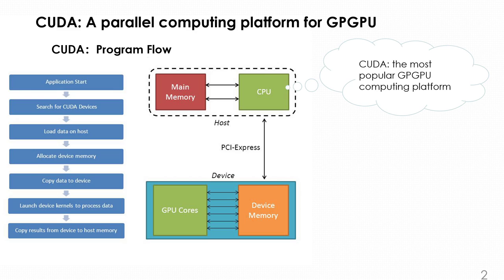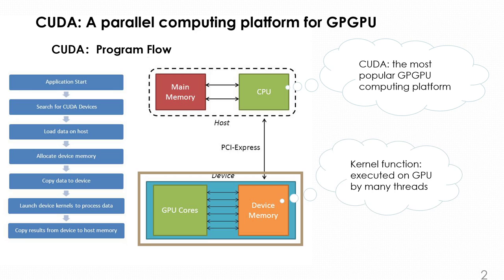You can see the basic flow here. First, we start the application and search for devices, reload data to host, allocate device memory, and copy data to device. Most importantly, we have a kernel function. The basic idea is that it allocates resources on CPU side and executes kernel function on GPU side, which is our target to detect synchronization bugs.